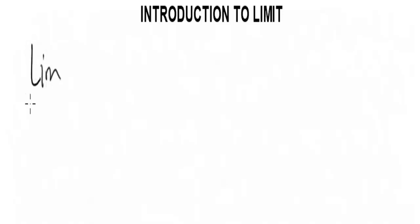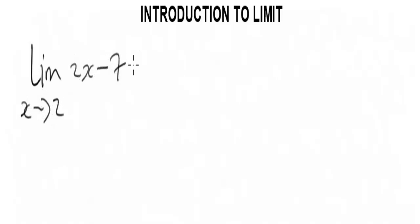You are given limit x tending to 2, and you have 2x minus 7. When you have a question like this, you use the substitution method. So all you have to do is, since x is tending to 2, you plug 2 into x.